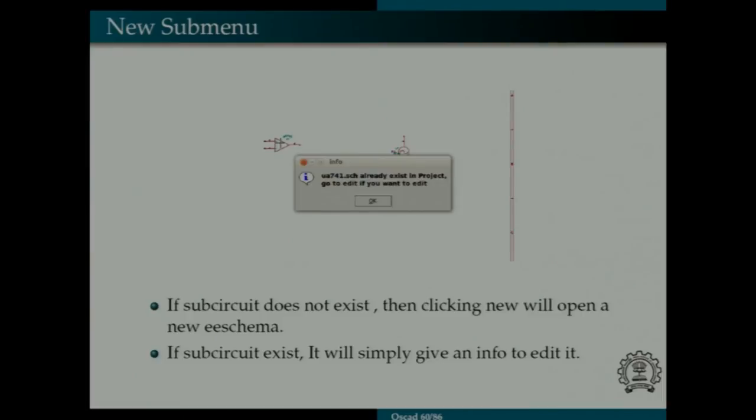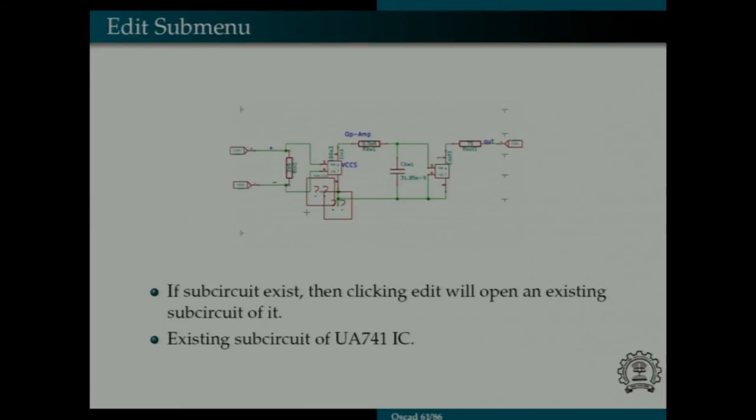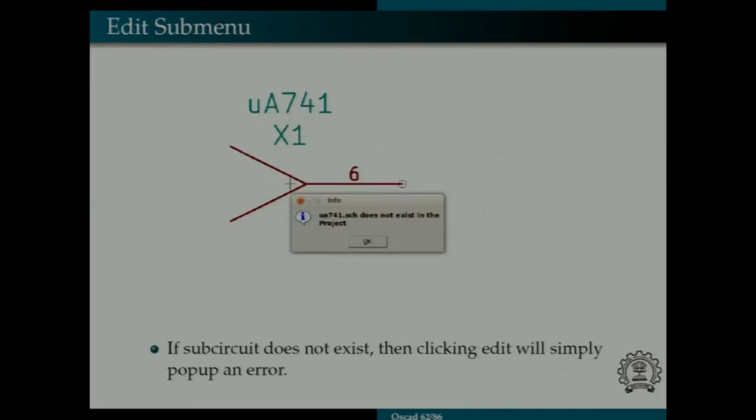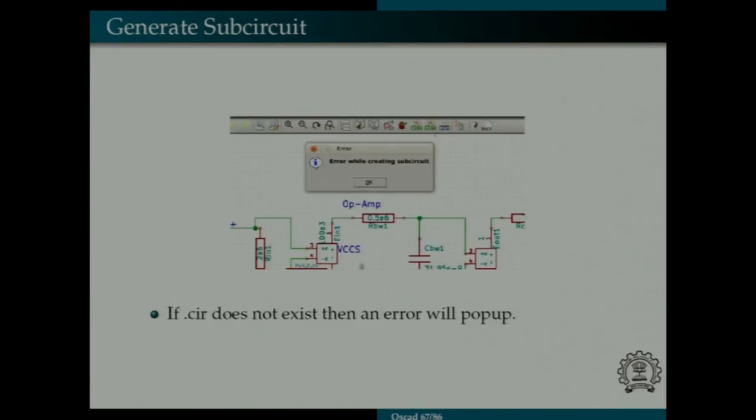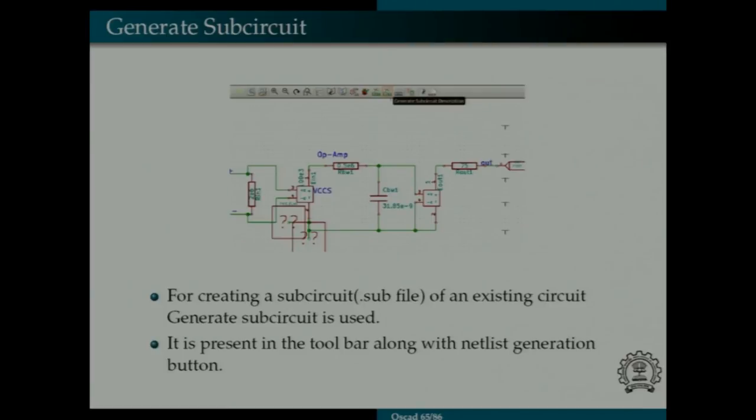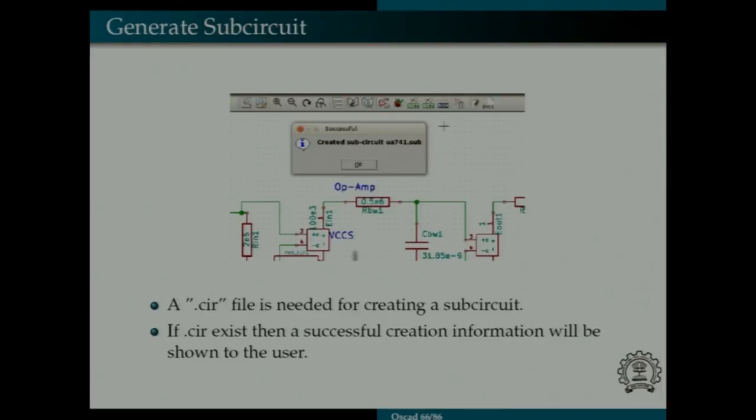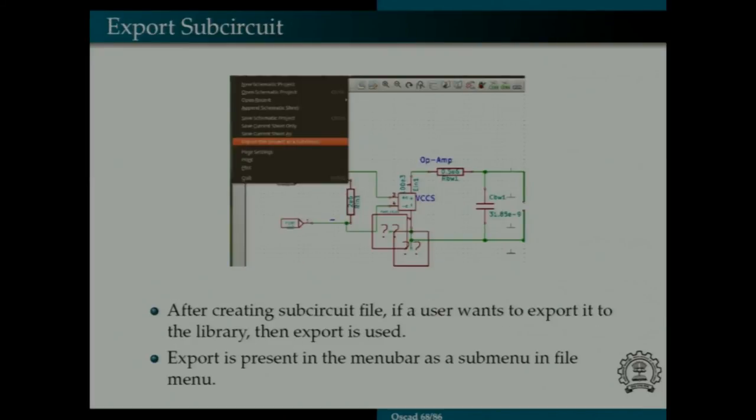This is a view of inside e-schema. This is an IC UA741. When I right-click on it, the sub-circuit sub-menu is present inside edit sub-menu. And you can see there are three more sub-menus, new, edit and import. These new edit import works in the same way as was present in the OSCAD toolbar. Suppose if a sub-circuit does not exist of that particular IC, it will show an error that sub-circuit does not exist. This is of new button. Suppose sub-circuit is already exist. And if a user clicks on new, it will pop up another go to edit if you want to edit because sub-circuit already exists. And in the same way new, if a sub-circuit does not exist in that current project, it will open a new schema for creating a sub-circuit for that user. This is of edit sub-menu. If a sub-circuit already exists, this is an example of UA741. It will open the existing sub-circuit in a new schema for the user to edit it.